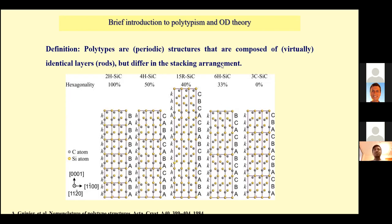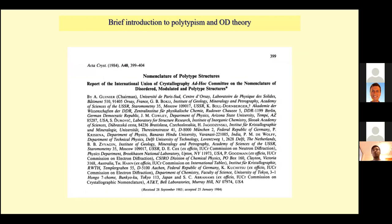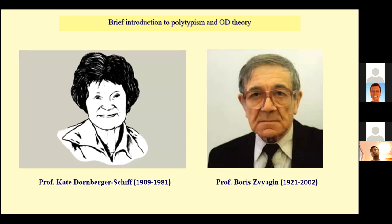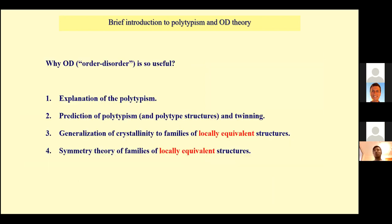Polytypes are periodic structures composed of identical layers — or rods, and so on. There is a nomenclature of polytype structures developed by the International Union of Crystallographers; the report was published in 1984, based on theory developed by two well-known crystallographers: Professor Dornberger-Schiff from Germany and Professor Boris Wágner from the Soviet Union, later from the Russian Federation.